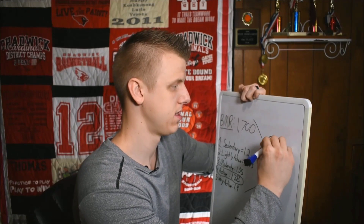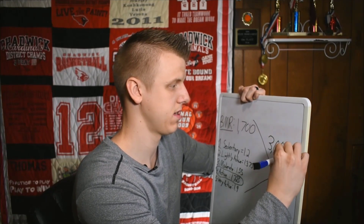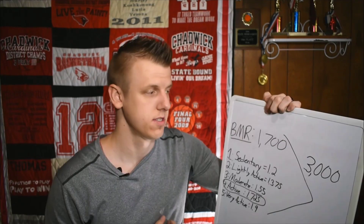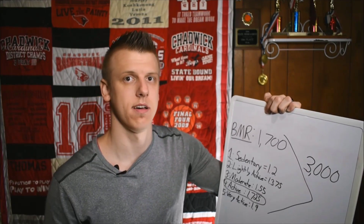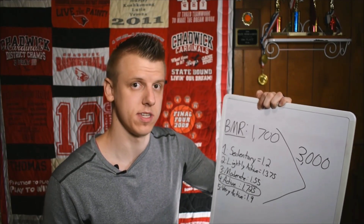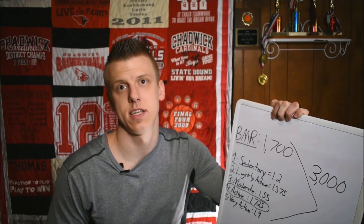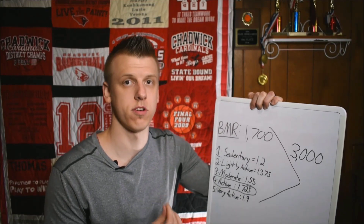All we do from here is multiply our BMR by the activity factor. Using the active multiplier of 1.75, that puts us right around 3,000 calories — so to keep the math easy, I'll put 3,000. That is a very simple way to figure out how many calories you need every day.